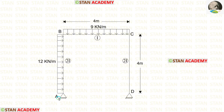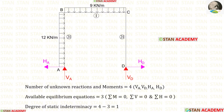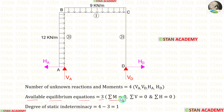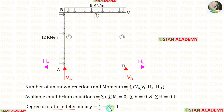In this frame, at points A and D there are hinged supports. Now let us find the degree of static indeterminacy. The number of unknown reactions is 4: the vertical reactions VA and VD, and the horizontal reactions HA and HD. The available equilibrium equations are 3: sigma M = 0, sigma V = 0, and sigma H = 0. The degree of static indeterminacy is 4 minus 3, which equals 1.